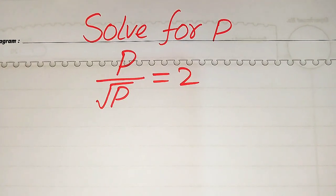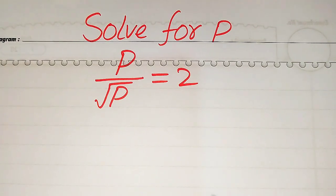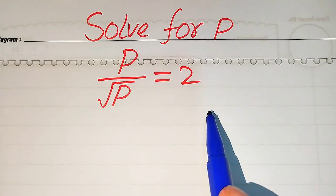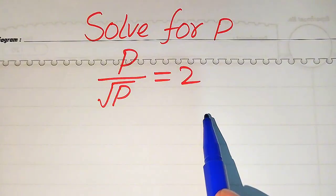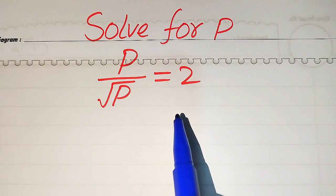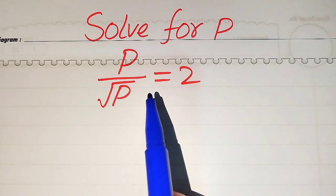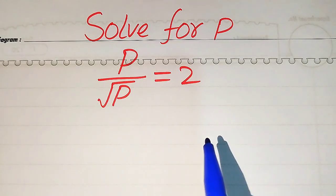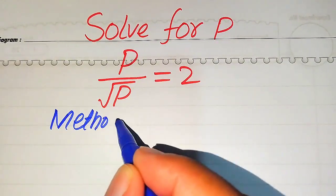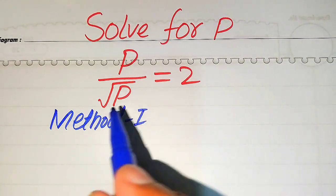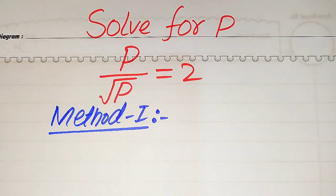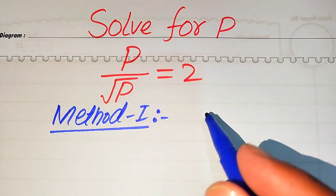Hello everyone. How to solve this problem: for the values of p, if we have p divided by square root of p equals 2. First we find all the roots of this equation, and at the end we will verify which of the roots are solutions and which are extraneous roots. We will solve this problem by two methods.